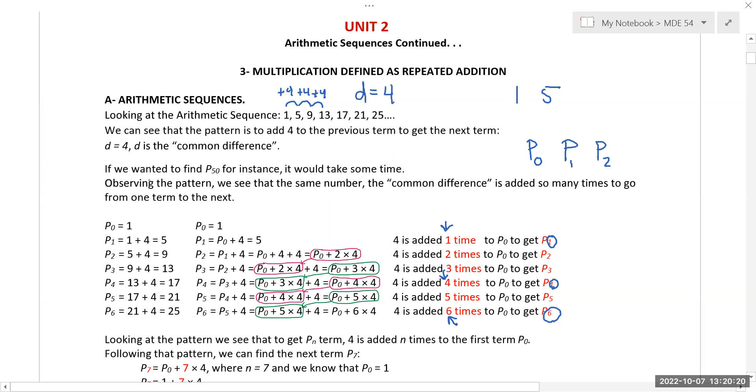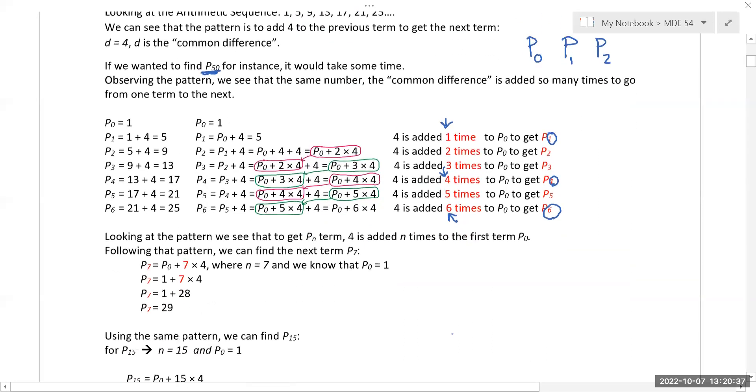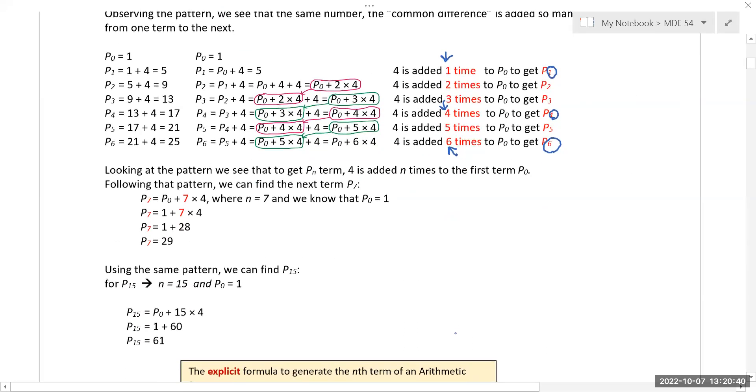If we kept going and tried to get to P_50, that would definitely take some time. Instead, if P_6 means multiply it 6 times, P_50 just means multiply it 50 times. If I wanted to get P_7, that would be 29 just by continuing to add. Let's see if it works: P_7 equals P_0 plus 7 times 4, which is 1 plus 28, which is 29. It works!